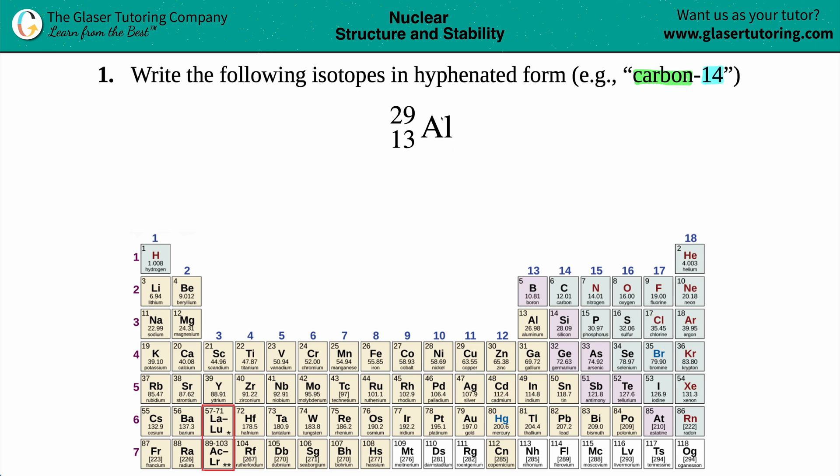And then we just have to give a number to it. Now, in our case, we have Al. You might know what Al is, but if you don't, you can always go back to the periodic table and find out where Al is. And it's right here.